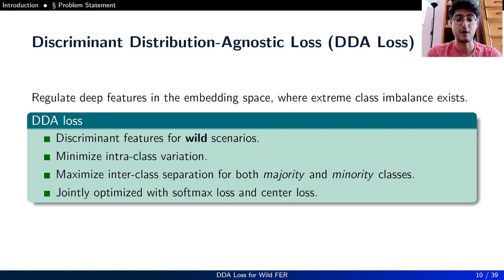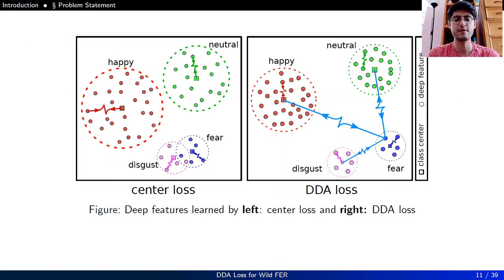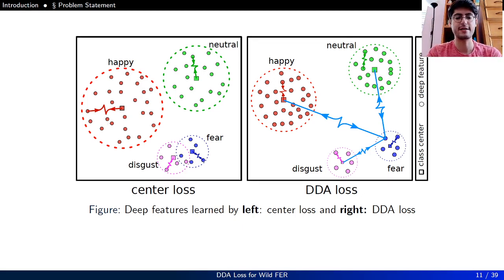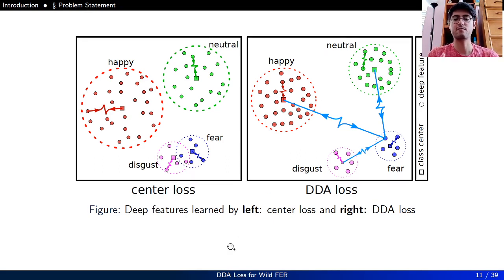DDA Loss is jointly optimized with softmax loss and center loss. Compared to center loss, which pulls deep features of a class toward their corresponding class center in the embedding space, DDA Loss additionally pushes deep features of a class away from other class centers. As a result, we have a more optimized embedding space where both majority and minority classes are well separated.